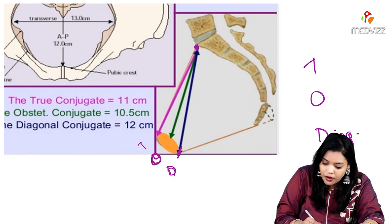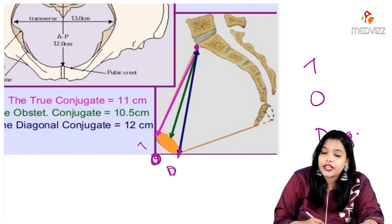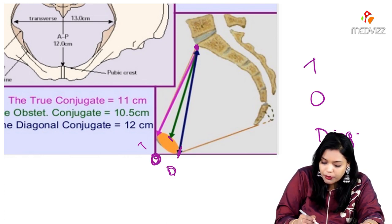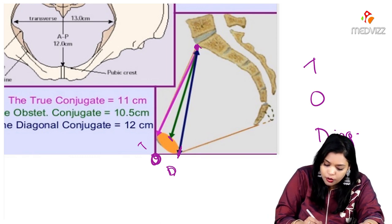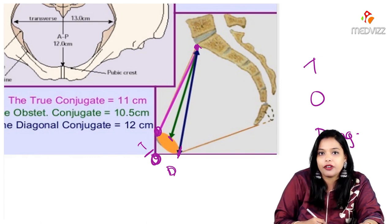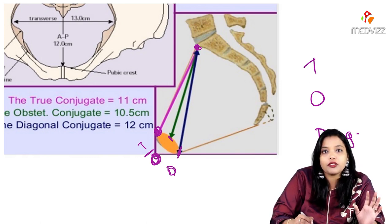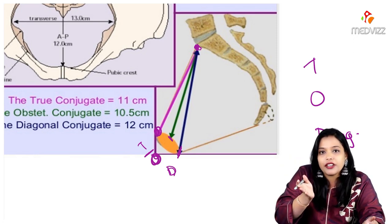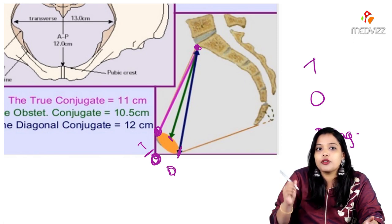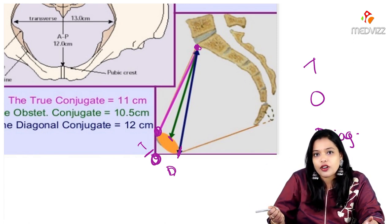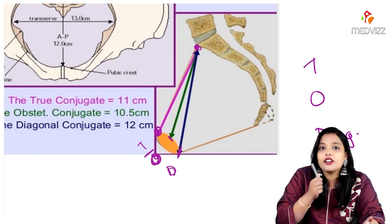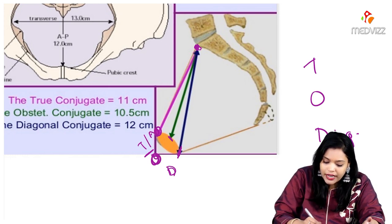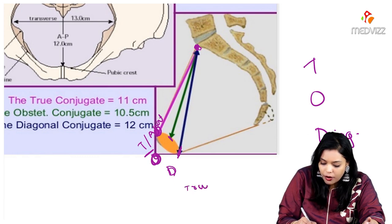Next we have the obstetric conjugate — from the posterior surface of the pubic symphysis to sacral promontory. True conjugate is from the upper border of pubic symphysis to the sacral promontory. Sacral promontory is common, pubic symphysis is common, but lower border, posterior surface, and upper border — remember this as DOT: Diagonal, Obstetric, True. True conjugate is also called anatomical conjugate.